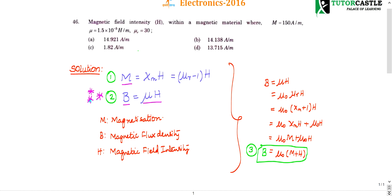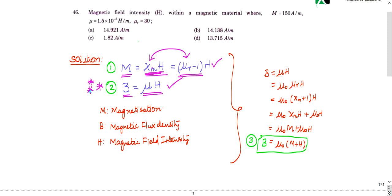Similarly, M equals χₘ into H. Please try to remember these two formulas. If you know these two formulas, you can do any question. So like B is same as μ into H, M is nothing but χₘ into H, where χₘ is the susceptibility. χₘ is nothing but μᵣ minus 1 (relative permeability minus 1) into H. Please try to remember these relationships. M is the amount of magnetization, B is magnetic flux density, and H is magnetic field intensity.